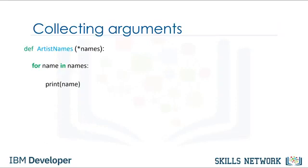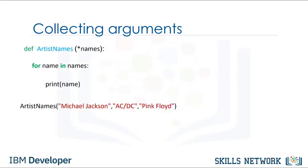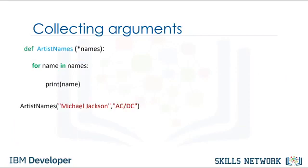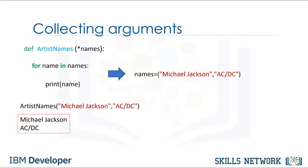Variadic parameters allow us to input a variable number of elements. Consider the following function — it has an asterisk on the parameter names. When we call the function with three parameters, they are packed into the tuple names and we iterate through the loop, printing the values accordingly. If we call the same function with only two parameters as inputs, the variable names only contains two elements, and only two values are printed out.